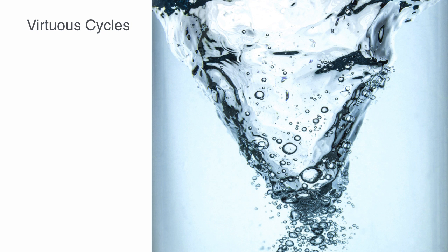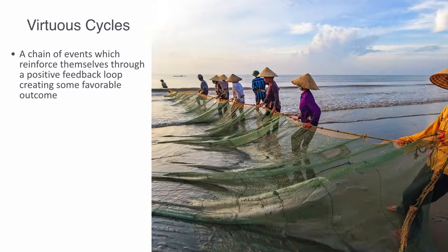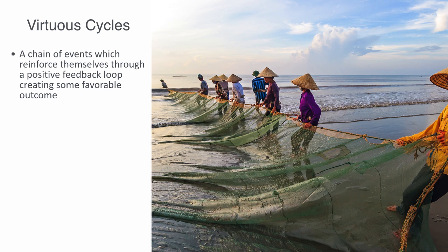The term virtuous cycle refers to the opposite phenomena—a chain of events which reinforce themselves through a positive feedback loop, creating some favorable outcome. As an example of a virtuous ecological cycle, we might cite the Philippines fishery. After World War II, with the introduction of destructive fishing methods such as dynamite, cyanide, and small mesh fishing nets, a number of interlocking and mutually reinforcing vicious cycles were set into motion to significantly degrade the state of the marine ecosystem surrounding Apo Island.